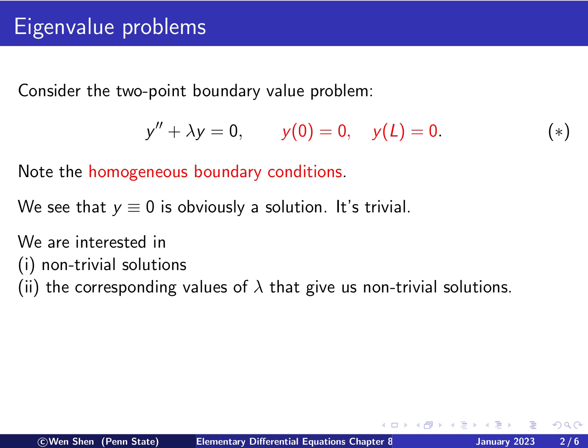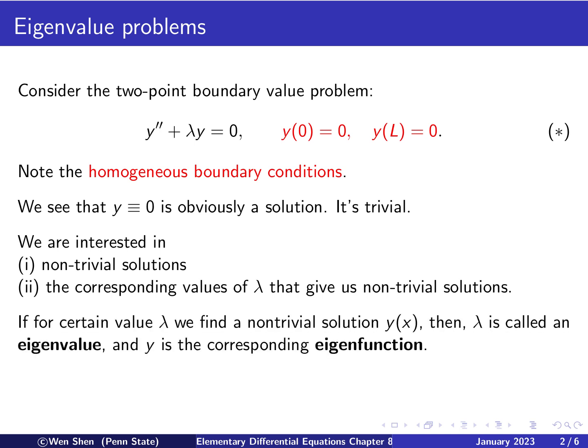So what we are interested in this problem is the following. We are interested in non-trivial solutions, solutions that are not identically 0 on the interval, and the corresponding values of lambda that would give us non-trivial solutions. So that means not all lambdas, any constant, would give a solution. Only certain values of lambda will do that.